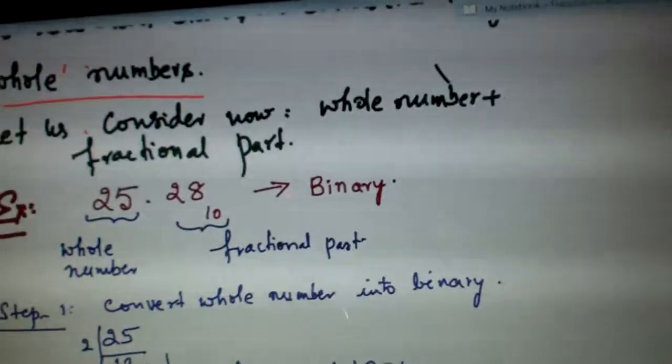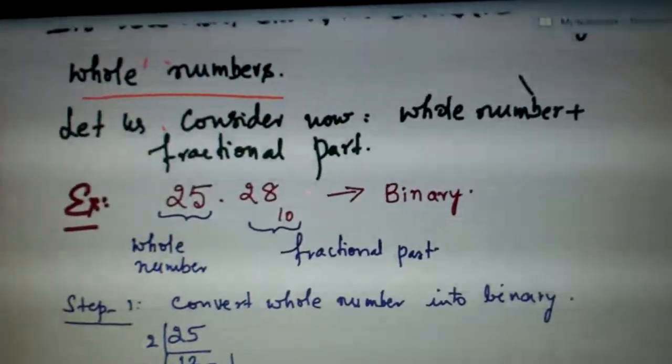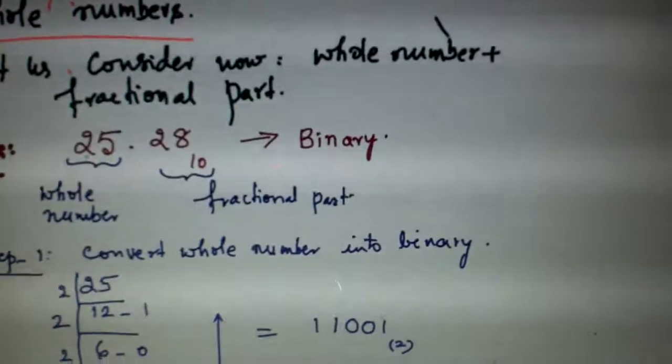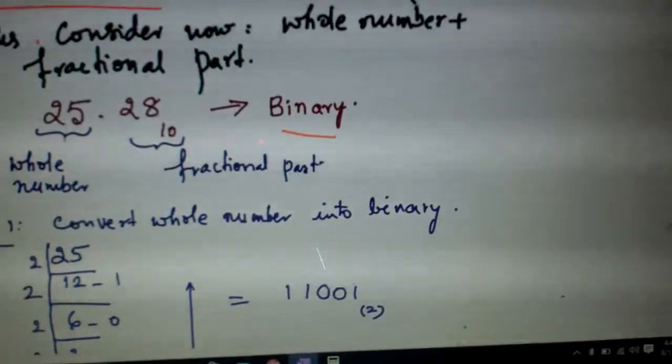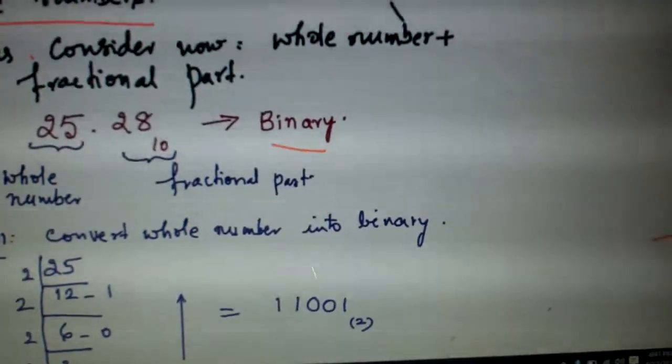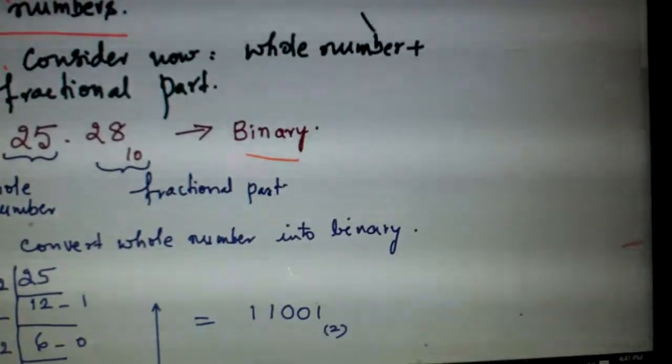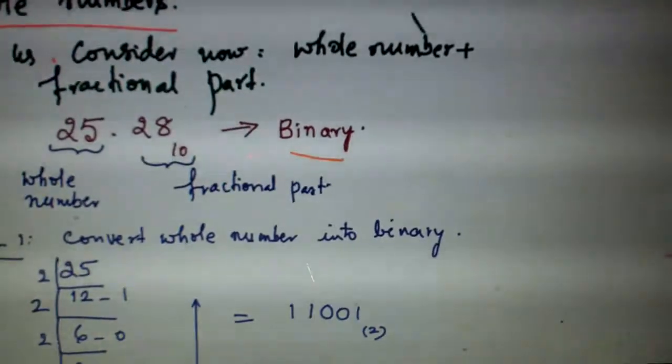For that, let me take this example of 25.28 and convert it into binary. So this becomes the whole number and this is the fractional number. What will you do now? Separate the whole number and fractional numbers.